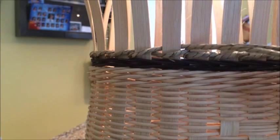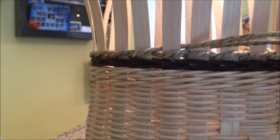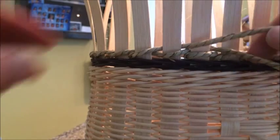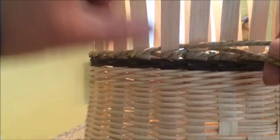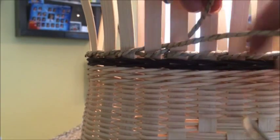This is where you make the arrow. You're still going to go in front of a stake and behind one, but instead of going on top of your weaver, you're going to go under. So lift the weaver in front of this stake and behind the next one.